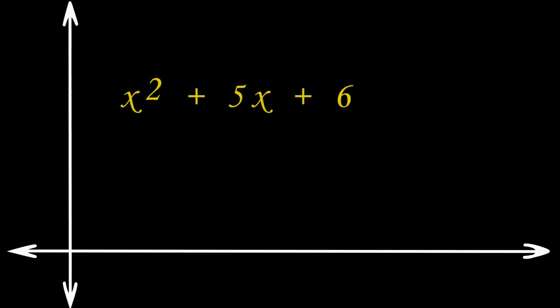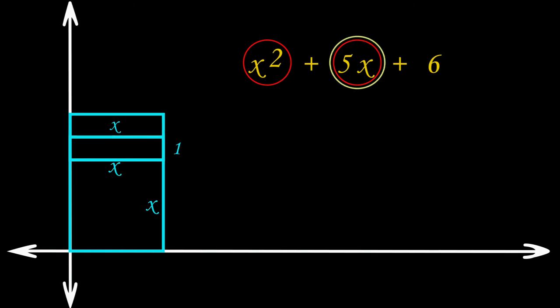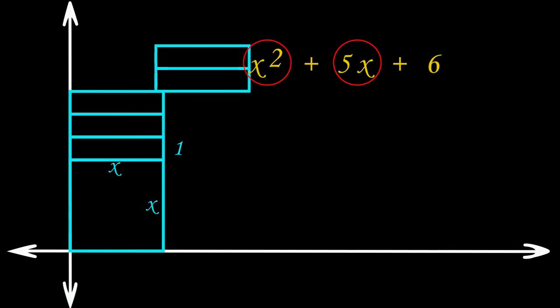Let's visualize the factorization of the quadratic polynomial x squared plus 5x plus 6. x squared can be visualized as a square with sides of measurement x. For the second term 5x, we consider a rectangle of area x times 1 — and since we have 5x, we place 5 such rectangles over the square.